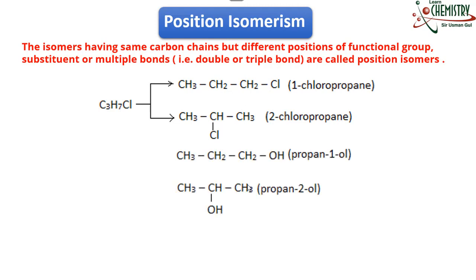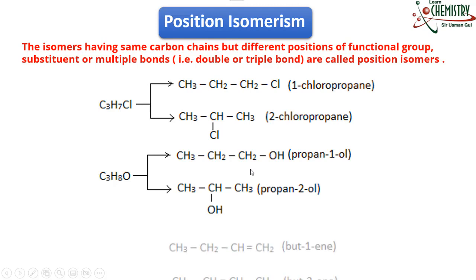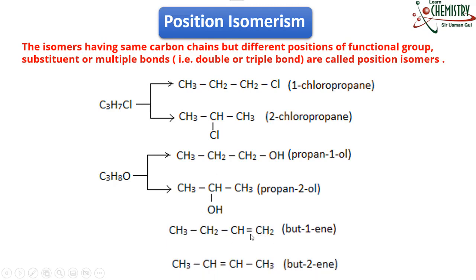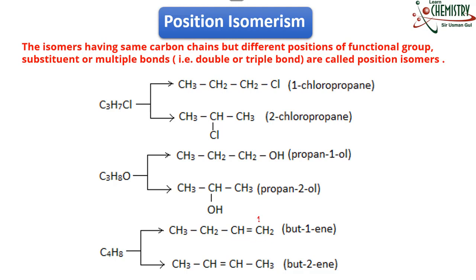Another example: three carbons, eight hydrogens, and one oxygen — same molecular formula. The OH group is connected to the first carbon in the first example, and to the second carbon in the second. Another example shows double bond position: both have the molecular formula C4H8. In the first, the double bond is between carbon one and two; in the second, between carbon two and three. This change of double bond position is called position isomerism.